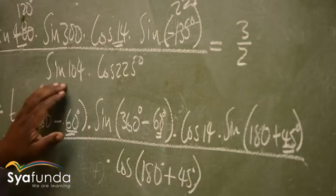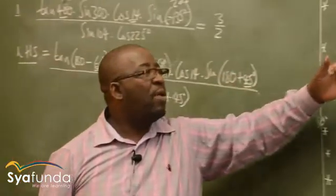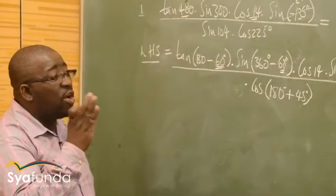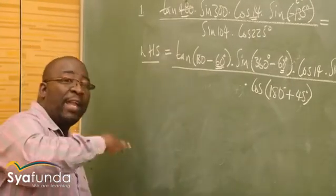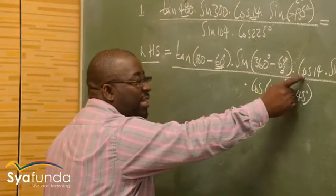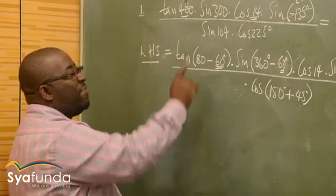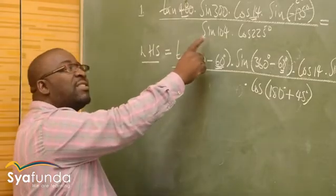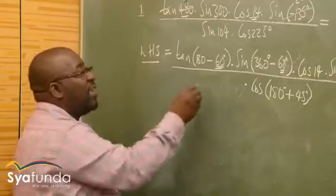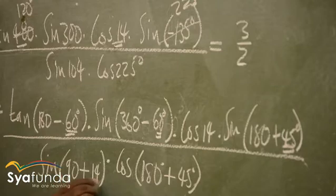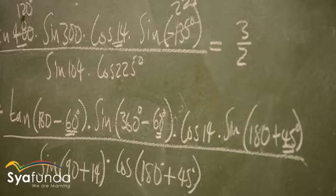What do we have here? We've got sin 104. I know sin 104 is in the second quadrant. I need it in the form 90 plus something. 90 plus 14 gives us 104. What changes sine into cosine? It is 90 degrees. So definitely I must use 90 here. 90 plus 14 will give me sin(90 + 14), and I can see cos 14 coming out of there. I'm on the right track.